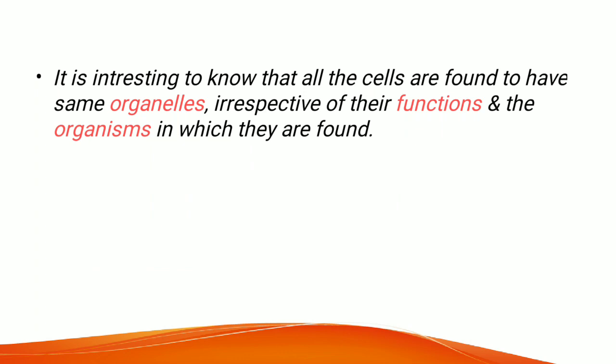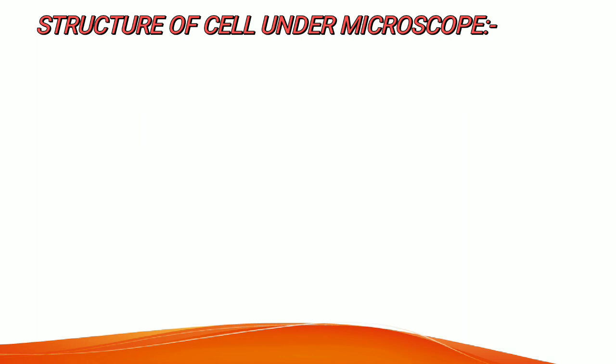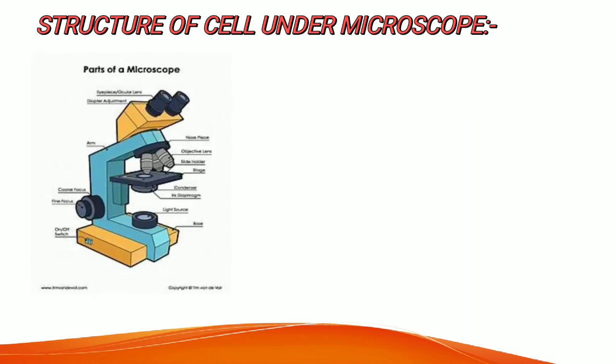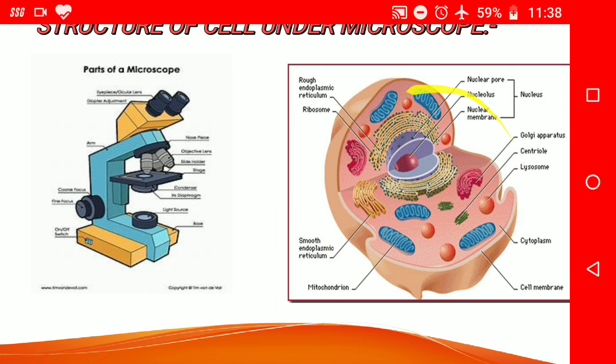If we observe the cell under the microscope, we can see these organelles very clearly. This is the picture of a microscope. The microscope was first discovered by Anton van Leeuwenhoek in 1674. By observing the cell under the microscope, we can see the structure of the cell.